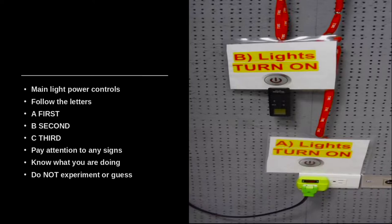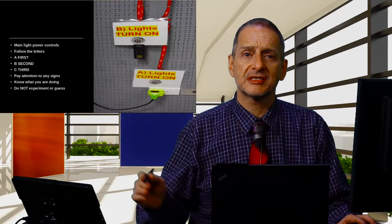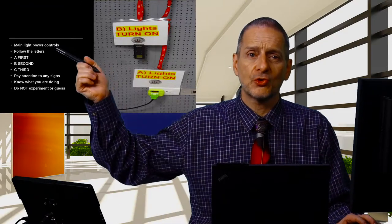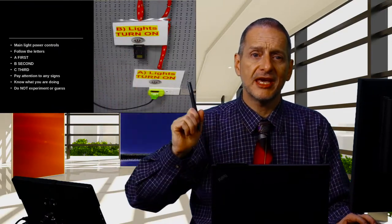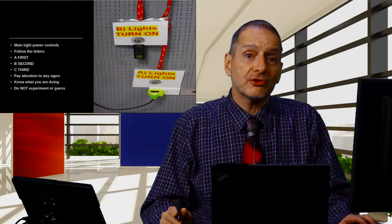When you come into the lab, make sure you follow the SOP instructions. For our lab, we have instructions labeled on things. For example, lights are labeled here, and we have a QR code where you can go online and find a step-by-step checklist. In this example, you should control the lights A first, then D second. Just follow those instructions.